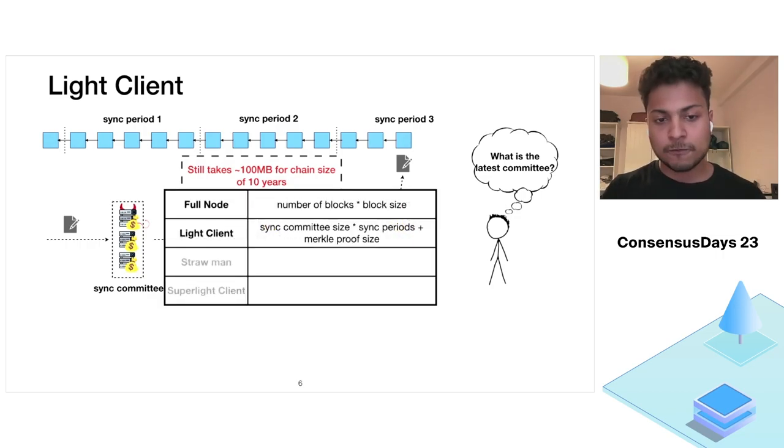So let's do a quick recap. This construction is the light client construction and the communication complexity of this construction is the sync committee size and the number of sync periods plus the Merkle inclusion proof.